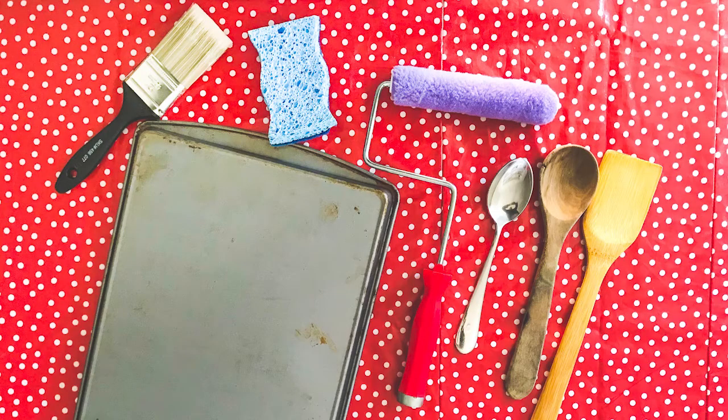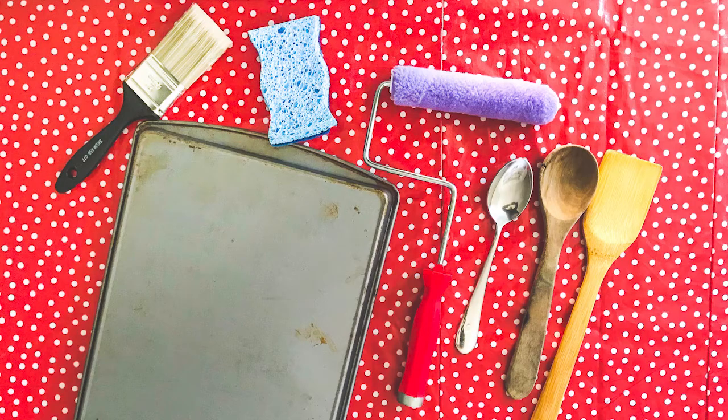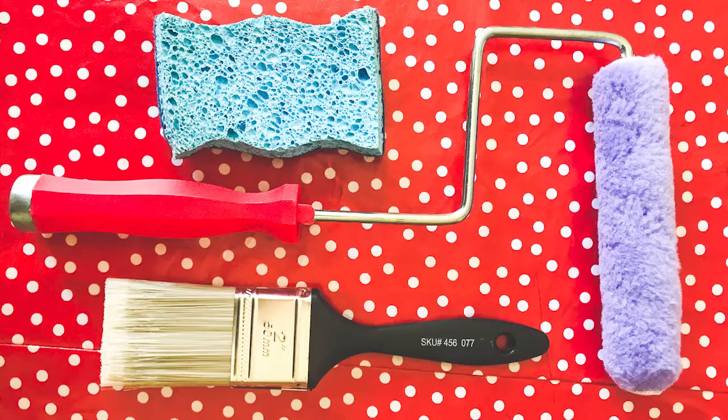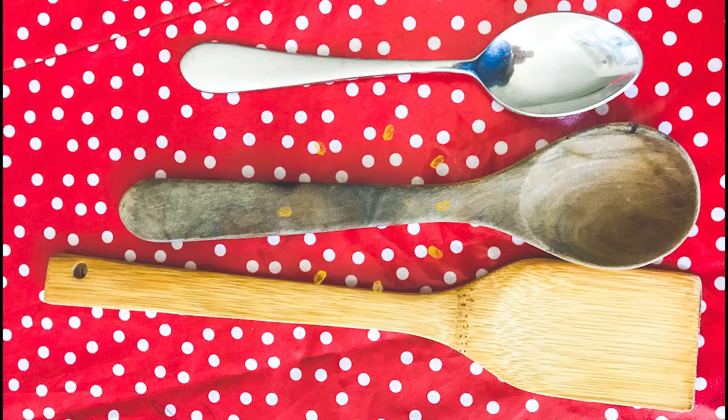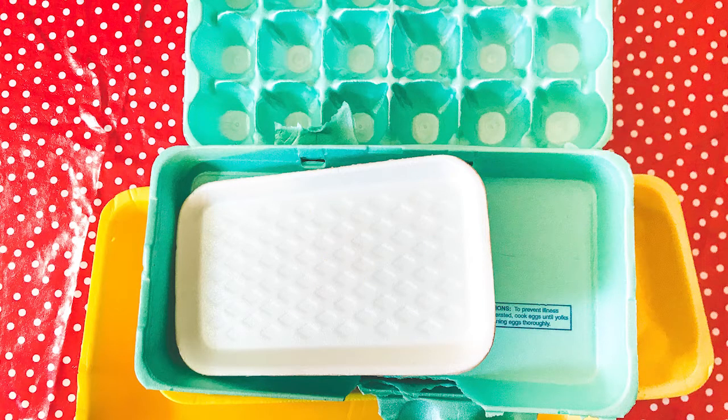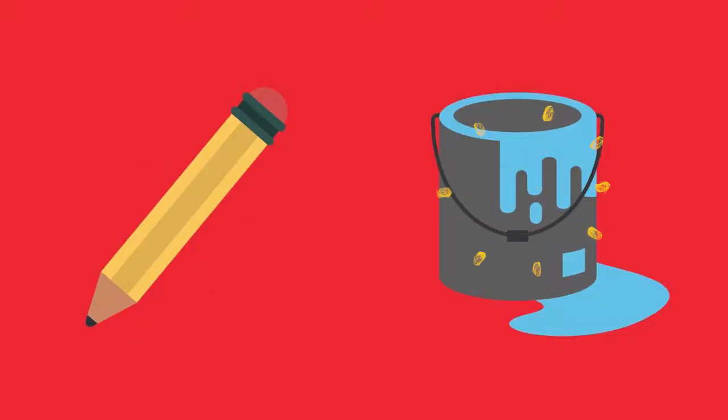For this activity, I'll be using a smooth surface like a sheet pan, sponges, paint brushes or rollers, large spoons wooden or metal, recycled styrofoam, construction paper, a dull pencil, and paint.